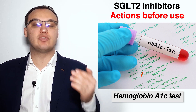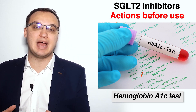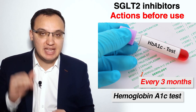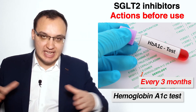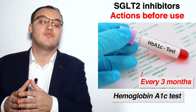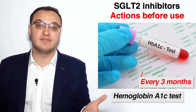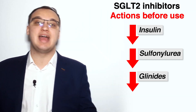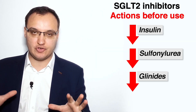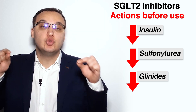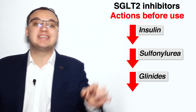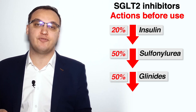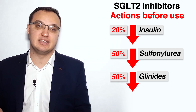Hemoglobin A1c should also be measured every three months initially, then the interval can be extended to every six months in very stable patients. Insulin should be reduced by around 20% and sulfonylurea or glinides by 50% when starting SGLT2 inhibitors, due to the risk of hypoglycemia.